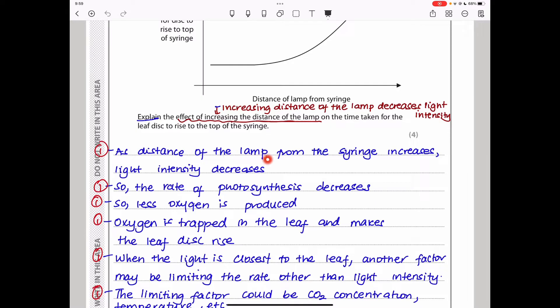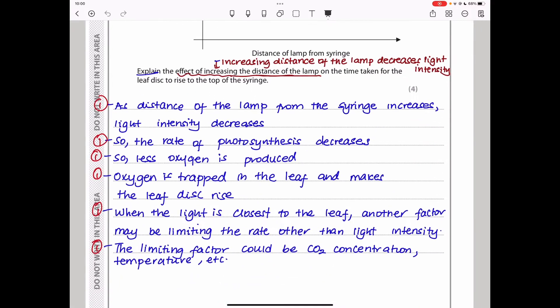Explain the effect of increasing the distance of the lamp on the time taken for the leaf disc to rise. As distance of the lamp from the syringe increases, light intensity decreases. That is key. If light intensity decreases, there will be a lower rate of photosynthesis. Due to this, there will be less oxygen produced. Since oxygen is going to be trapped in the leaf, which makes the leaf rise, if there is less oxygen produced, there is going to be less of it trapped within the leaf to make it rise.